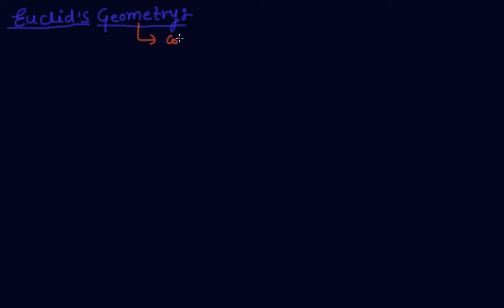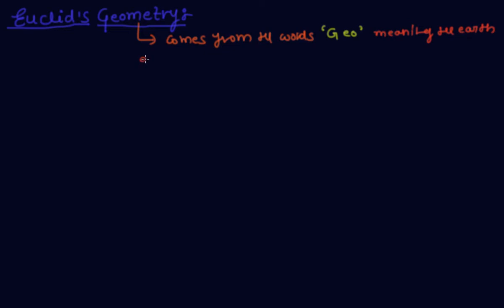So the first thing is: what is geometry? Geometry comes from the words 'geo' and 'metrian.' Geo means the earth, and metrian — spelled M-E-T-R-E-I — means to measure.